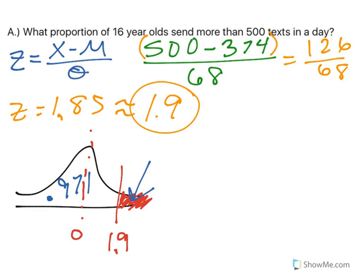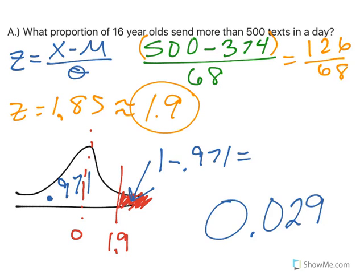To find this area to the right, I take all the area, which is 1, minus .971, and I end up with a probability of 0.029. So a very small chance that you're going to find somebody who sends more than 500 texts in a day based off of this data.